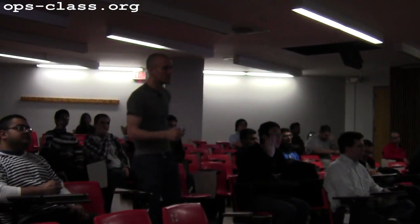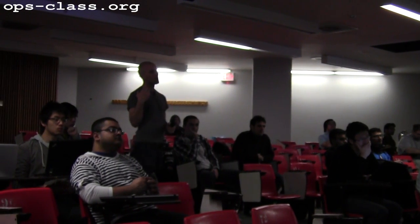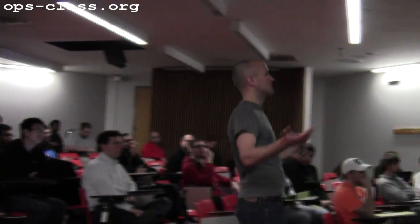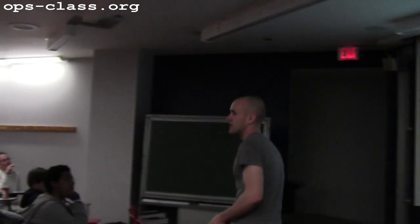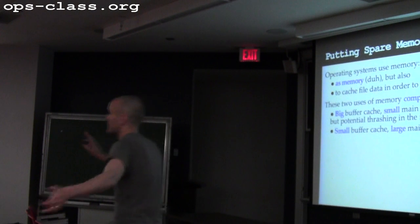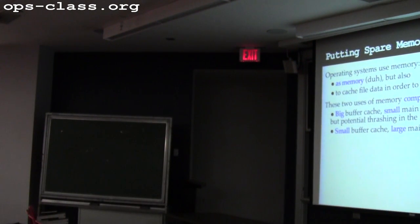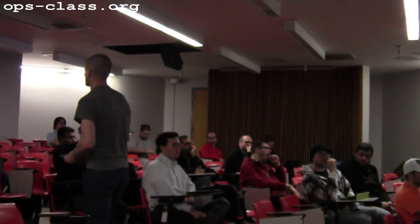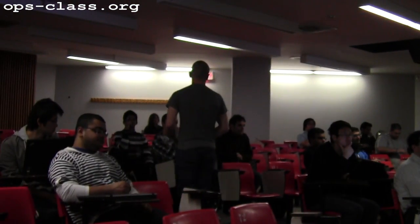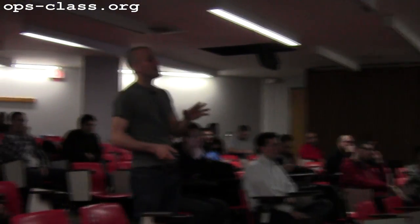Opposite case: small buffer cache, large main memory. When could this be a good thing? When I'm not using much disk. Maybe a computationally intensive application — it might read a little bit of data from a file, start some massive computation that sprawls all over memory, and then write a small result. So it might be OK to trim the buffer cache aggressively in order to provide a huge chunk of address space for the application to use efficiently.